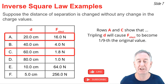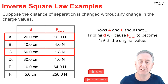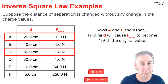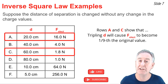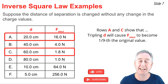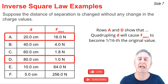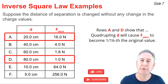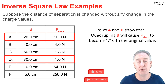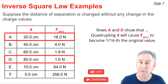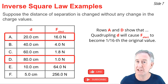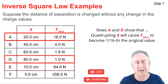Rows A and C illustrate that if you take the distance and triple it from 20 to 60 centimeters, you'll cause the force to become one-ninth of the original value. It was 16, and now it's about 1.8. Rows A and D show that if you quadruple the distance, it causes the force to go down by a factor of 4 squared. It was 16 newtons, and now it's one-sixteenth of that — 1 newton.